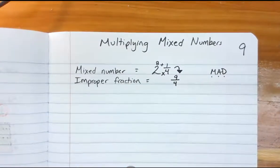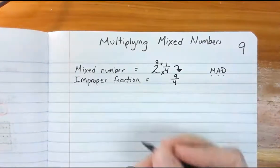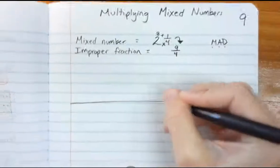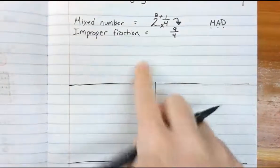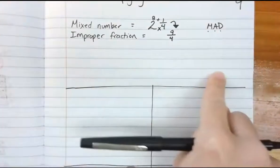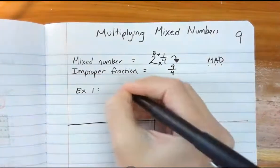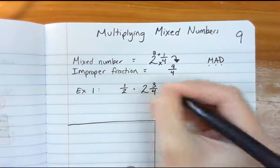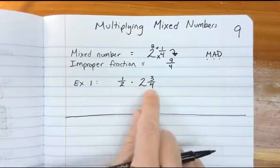Let's look at an example of what it looks like to multiply mixed numbers. We're going to do five examples, so leave enough space at the top of your paper for an example, then split the rest into four equal pieces. Example number one: I'm going to multiply one-half times two and three-fourths. Notice this is a plain fraction, but this is a mixed number.